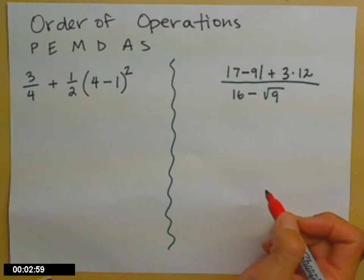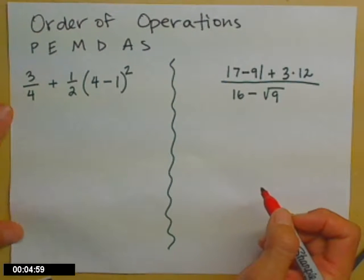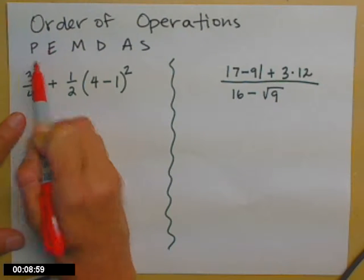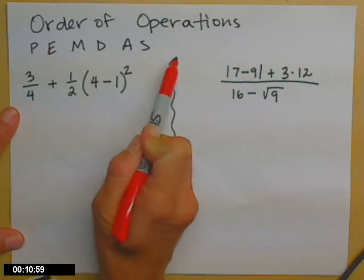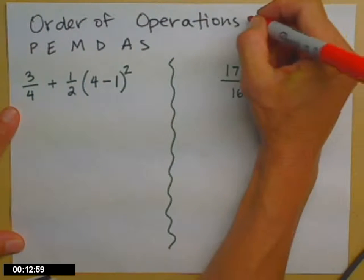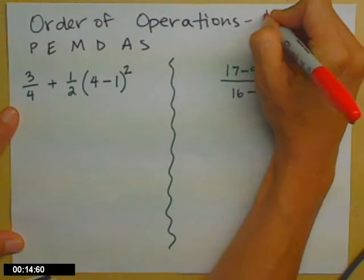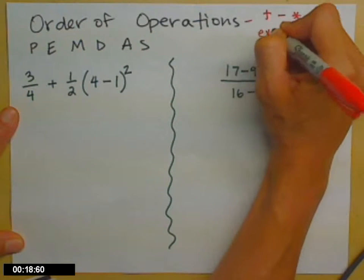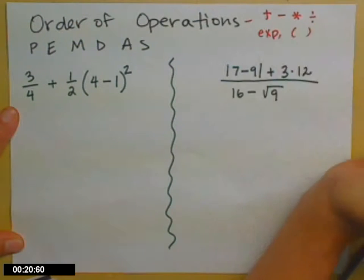So I'd like to do a quick review on the order of operations. Some of you may know PEMDAS. PEMDAS stands for the order that we do our operations. Operations, we're going to be talking about mathematical ones: adding, subtracting, multiplying, dividing, exponents, and parentheses.